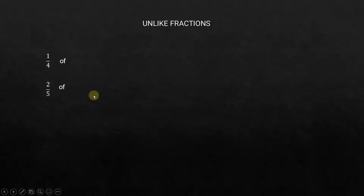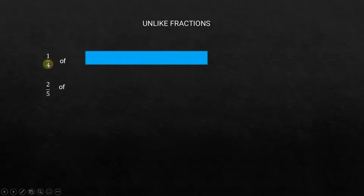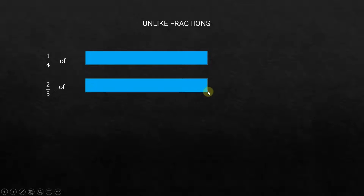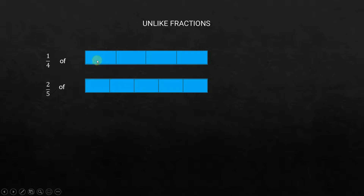Unlike fractions — for example 1/4 and 2/5 of some quantity. The quantity is the same, but 1/4 means we divide it into four parts and choose one, while 2/5 means we divide into five parts and choose two. We cannot directly add them because the unit sizes are not the same — there is no way to say one plus two is three since they are not of the same size.